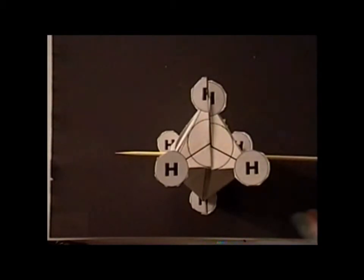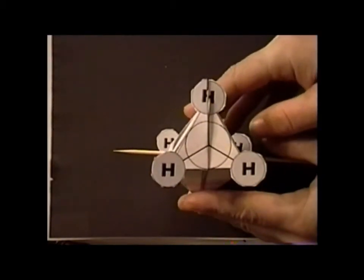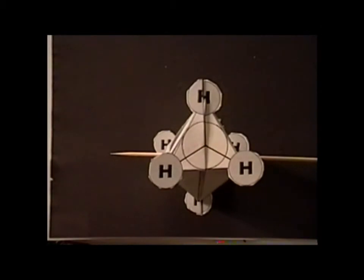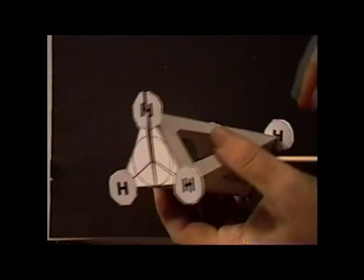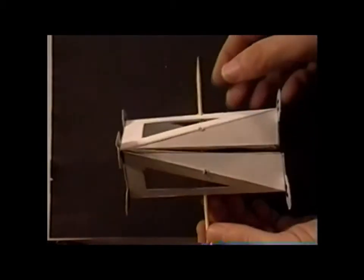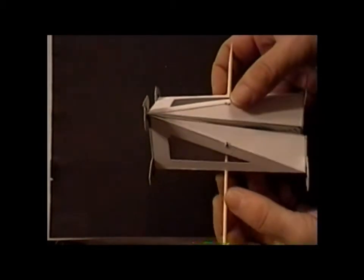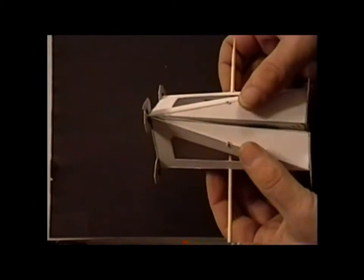But for the time being, let's look at some of the other symmetry operations of this particular class of compounds. If we look along this skewer here, we can demonstrate that it has three C2s.